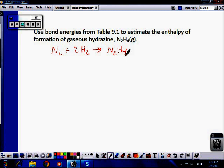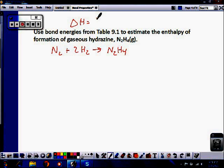So the next thing you need to remember is that to calculate delta H from bond energy, it's equal to the sum of the bonds broken, the energy of the bonds broken, minus the bonds formed.